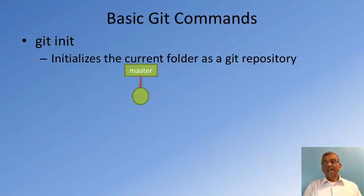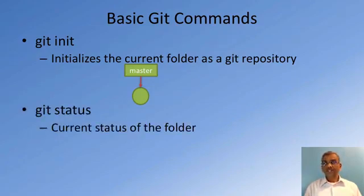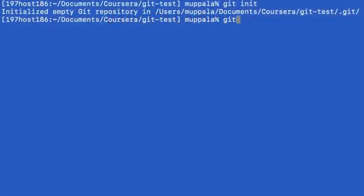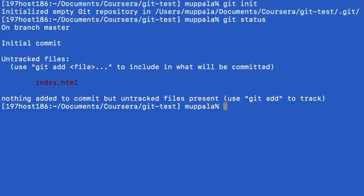The next command we are going to look at is git status. If you type git status at the command line, it will tell you the current status of the folder. You can see that it says 'on branch master' — that is the master branch — and it says 'untracked files' and shows index.html in red.